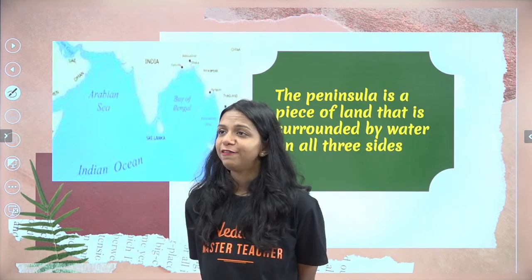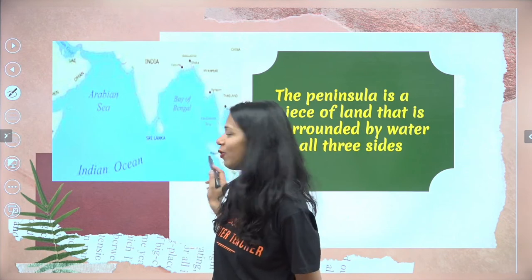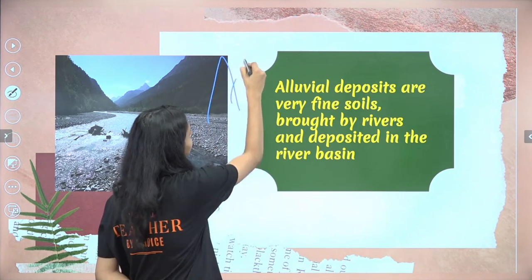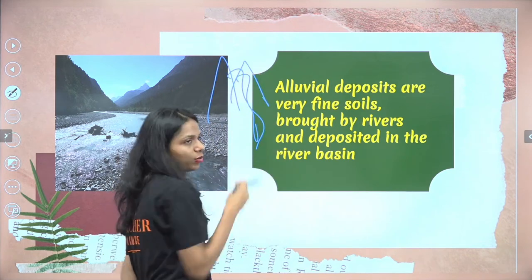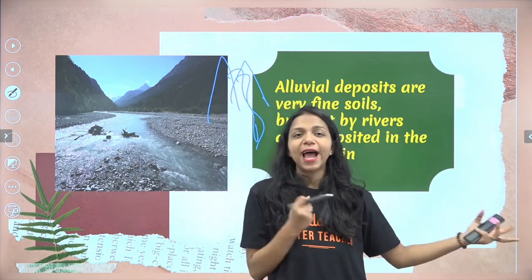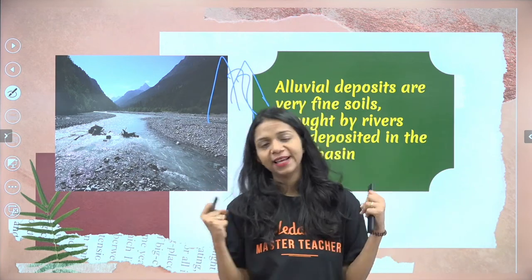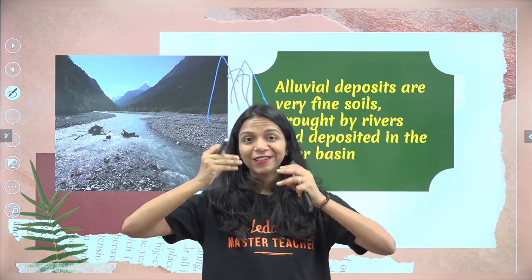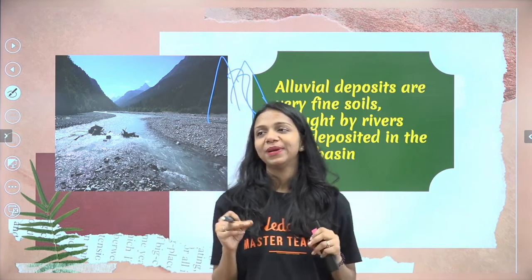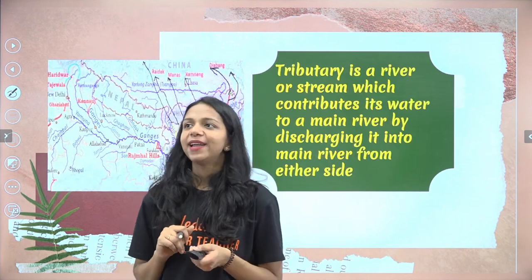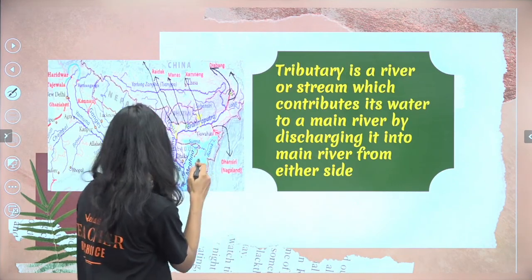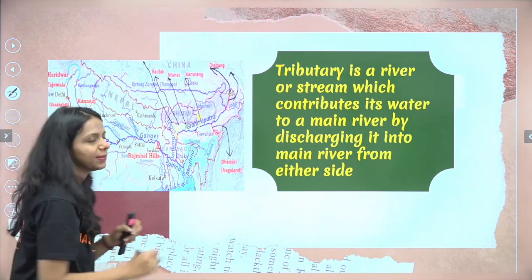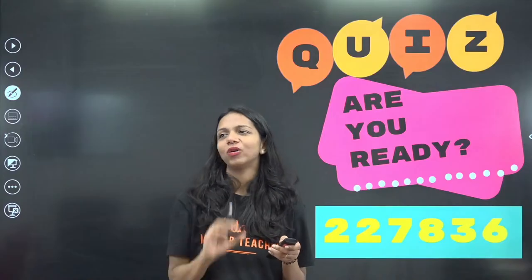Let's look at important terms from today. Peninsula — a piece of land surrounded by water on three sides. Alluvial deposits — rivers coming down from the Himalayas bring sand particles and important sediments with them, and these sediments deposited in the plain area are called alluvial deposits. Tributary — when you have a main river like the Ganga, the smaller rivers that join it — such as Gomti, Gandak, Son, and Tamsa — are called tributaries.